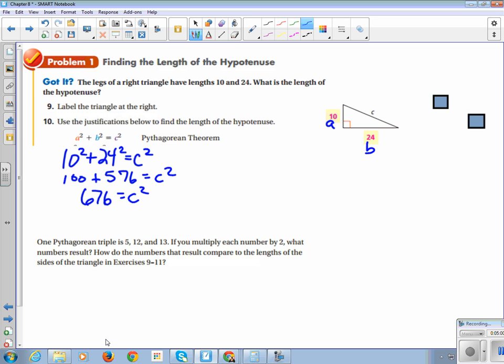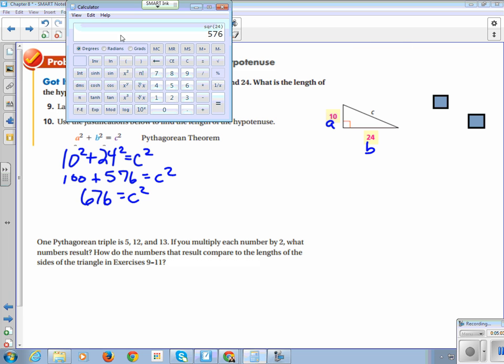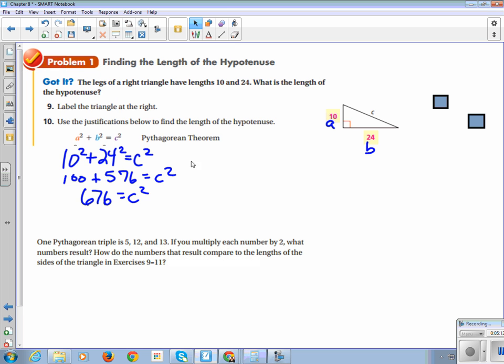Then I am going to add these together and get 676 equals c squared. Then I am going to take the square root of both sides. I do not have the square root of 676 memorized. So when I take the square root, I get 26.